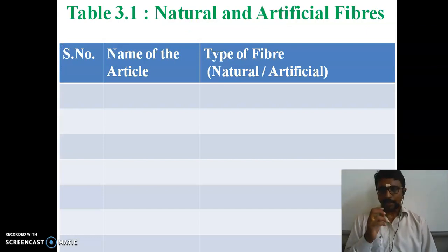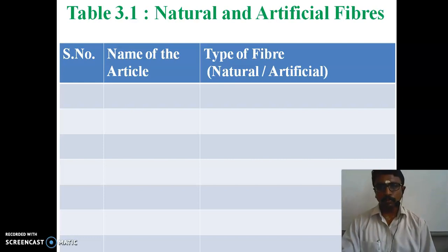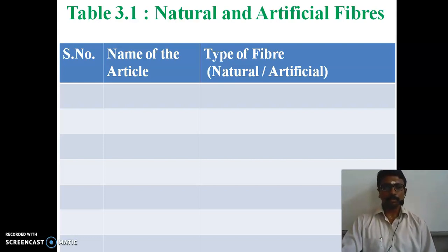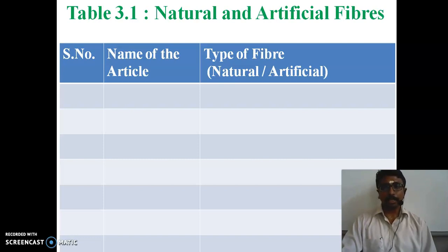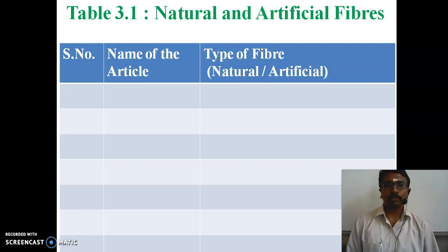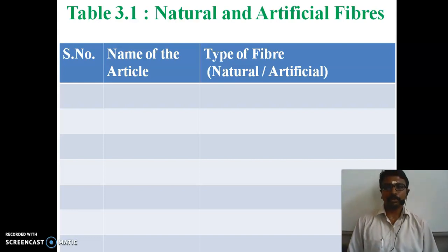Now take page number 32 from your book. Take a pen or pencil and open to page 32. In that page you can see Table 3.1, which covers artificial and natural fibers. You have to fill in the table with the answers.